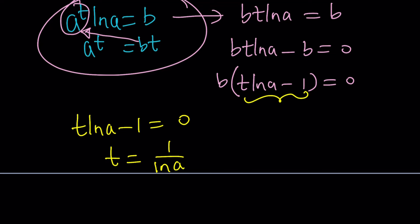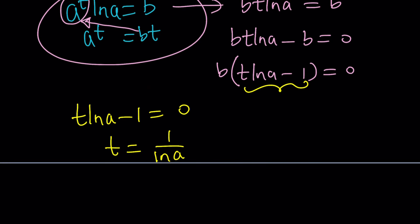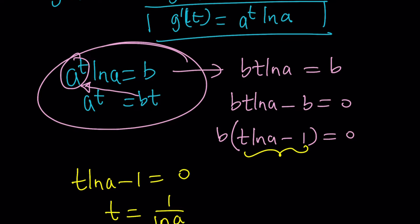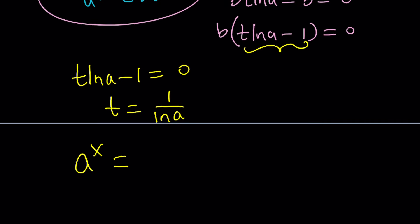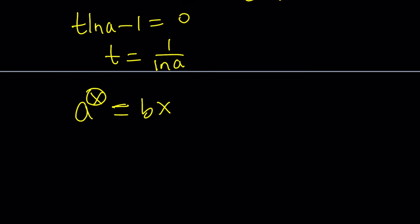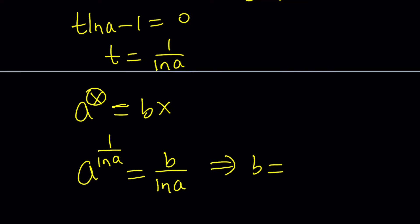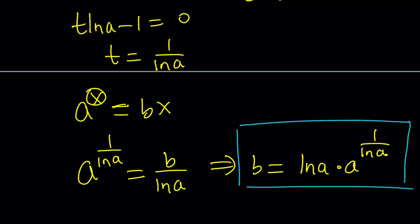Now, if t equals 1 over ln a is where they intersect, we can substitute back into a to the t equals bt. This gives a to the power 1 over ln a equals b over ln a. From here we can find b, which equals ln a multiplied by a to the power 1 over ln a. So yes, t depends on a, but b also depends on a — they're not independent of each other; they work together.